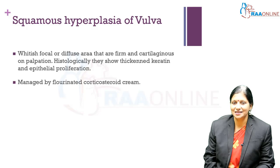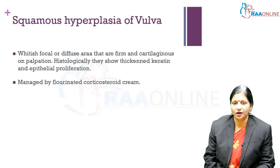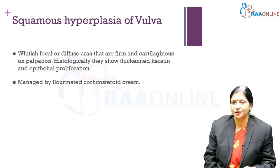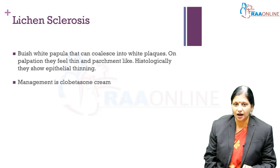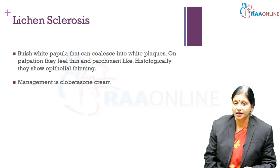Squamous hyperplasia of the vulva presents as whitish focal or diffuse areas that are firm and cartilaginous. Biopsy shows thickened keratin and epithelial proliferation. It is managed with fluorinated corticosteroid cream and observation. Lichen sclerosis appears as whitish elevated papules coalescing into white plaques that feel thin and parchment-like, with thinned epithelial lining. It is managed with clobetasone cream and kept under observation.